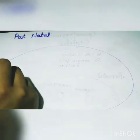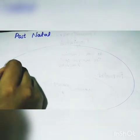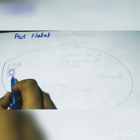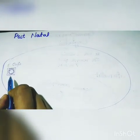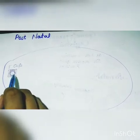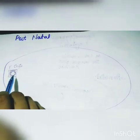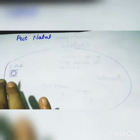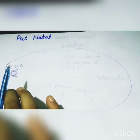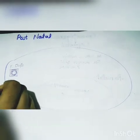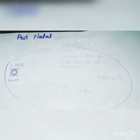This primary oocyte is arrested at prophase, specifically at the diplotene stage. Now this primary oocyte is surrounded by follicular cells, but most of them will degenerate. At birth around two million remain, and around the time of menstruation only about 40,000 cells will remain.